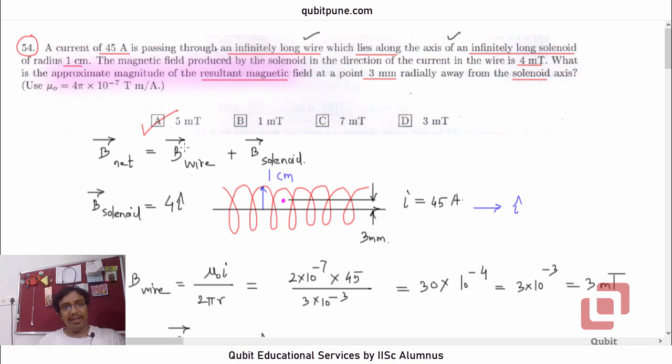One last thing. Why are they saying approximate magnitude? Why not exact magnitude? Well, it is under the assumption that the magnetic field produced by the solenoid anywhere in the interior of the solenoid is uniform. What they have given us here as 4 millitesla is just the magnetic field produced by the solenoid in the direction of the current in the wire. So we know that it is almost uniform, but not precisely uniform. So I think in my opinion, that is actually the reason why they said approximate magnitude of the resultant magnetic field.